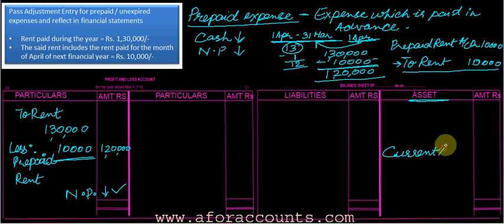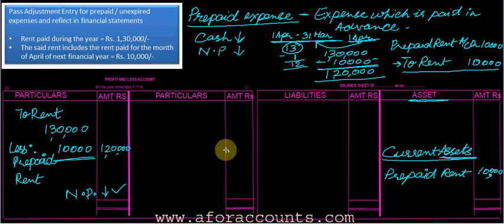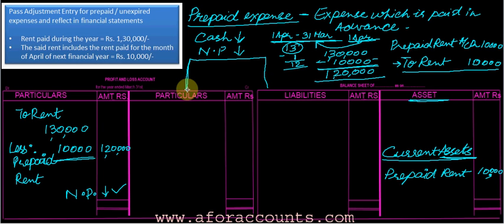And what about the balance sheet? In the balance sheet, under Current Assets, you have Prepaid Rent of ten thousand. In the next month I need not pay ten thousand because I have already paid it now, so it is an asset for me. Recapping: whenever there is something prepaid, from the total paid just subtract the prepaid amount and put it in the outer column for the P&L account, and on the assets side write it under Current Assets.